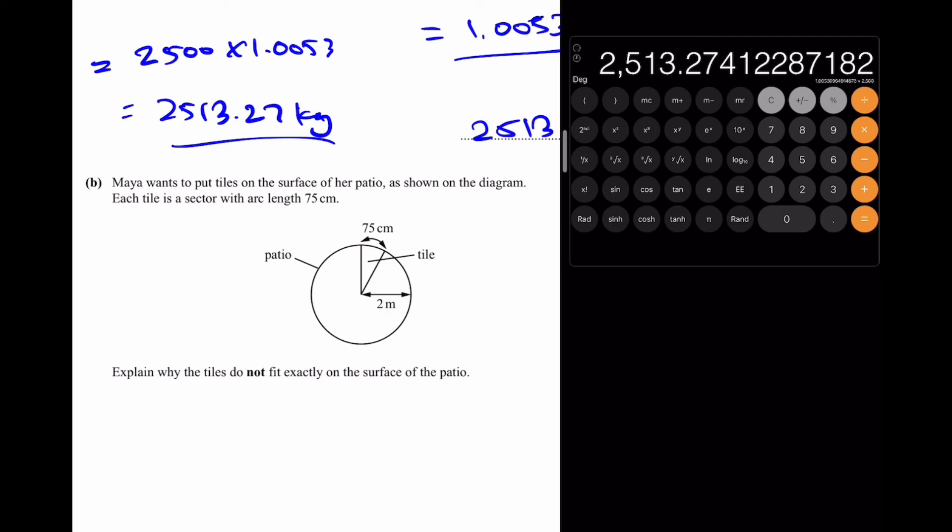Going over to part B: Maya wants to put tiles on the surface of the patio, as shown on the diagram. Each tile is a sector with arc length 75 cm. Explain why the tiles do not fit exactly on the surface of the patio. Well, the only reason is that these tiles are not fitting exactly due to there's not a whole number of tiles to be fit there around like sectors of pizza slices. These tiles act like pizza slices, but if these pizza slices cannot fill in the circle exactly, then of course they won't fit exactly on the surface.